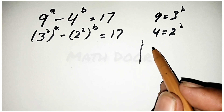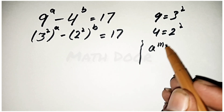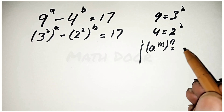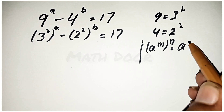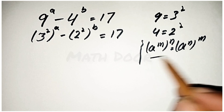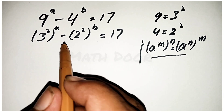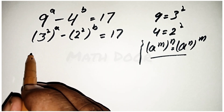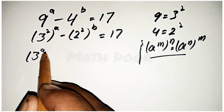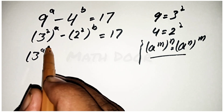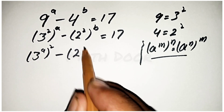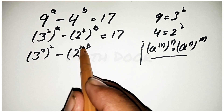We have a mathematical power rule: a power m, brackets n, is equal to a power n brackets m. We apply this rule on both values, so we write 3 power 2a minus 2 power 2b is equal to 17.